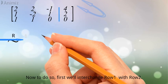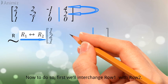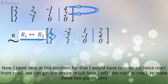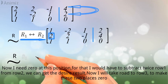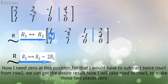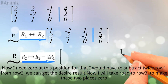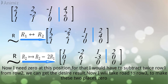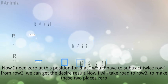Now to do so, first we will interchange row 1 with row 2. Now I need 0 at this position. For that, I would have to subtract twice row 1 from row 2. We can get the desired result. Now I will take row 2 to row 3 to make these two places 0.